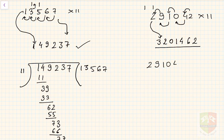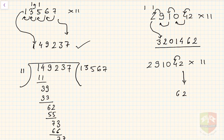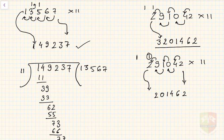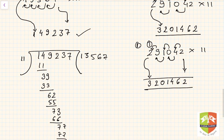Let me repeat 291042 into 11 more carefully. Take 2 down; add 2 plus 4 to get 6; add 4 plus 0 to get 4; add 0 plus 1 to get 1; add 1 plus 9 to get 10 — write 0, carry 1; then 9 plus 2 is 11 plus carry 1 is 12 — write 2, carry 1; finally 2 plus carry 1 is 3. Result: 3201462.